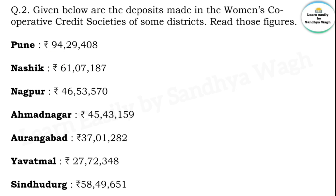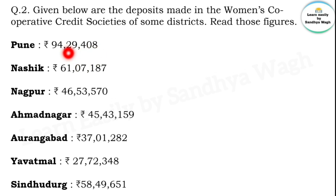Aurangabad: 37 lakh 1 thousand two hundred and eighty-two. Yavatmal: 27 lakh 72 thousand three hundred and forty-eight. Sindhudurg: 58 lakh 59 thousand six hundred and fifty-one. Commas are placed in these figures according to periods — units period: hundreds, tens, units; thousands period: ten-thousands and thousands; lakhs period: ten-lakhs and lakhs. So 94 lakh goes in the lakhs period, then thousands period: 29,408.